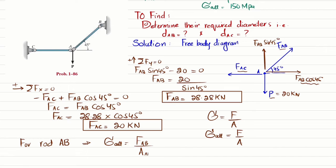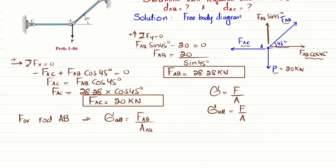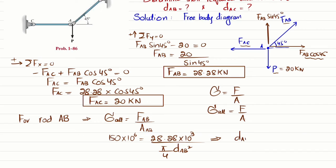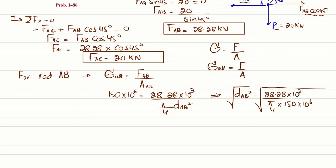For rod AB, allowable stress equals FAB divided by area of rod AB. So 150 × 10⁶ Pa equals 28.28 × 10³ N divided by (π/4)·d_AB². Solving, d_AB² equals 28.28 × 10³ divided by (π/4 × 150 × 10⁶). Taking the square root, the diameter of rod AB equals 0.0155 meters, or 15.5 millimeters.